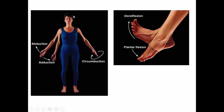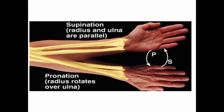Abduction and adduction are movements relative to the midline. Abduction is movement away from the midline — when you abduct someone, you take them away. Adduction is movement toward the midline — you're adding something back to the midline. With circumduction, the end of the bone draws a circle. Dorsiflexion is pointing your toes upward, and plantarflexion is pointing your toes downward — you're standing on tiptoe. In supination, your palms are pointed upward as though you're holding a bowl of soup and asking for more. In pronation, your palms are facing downward.